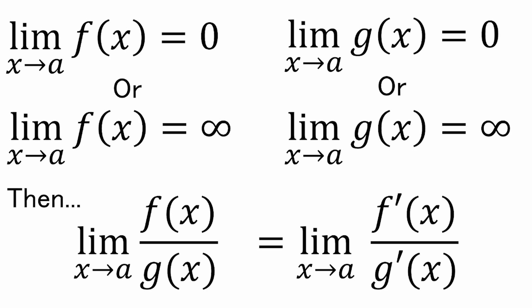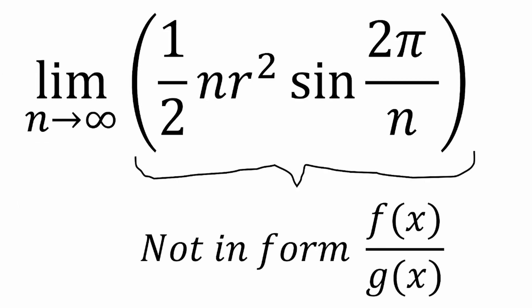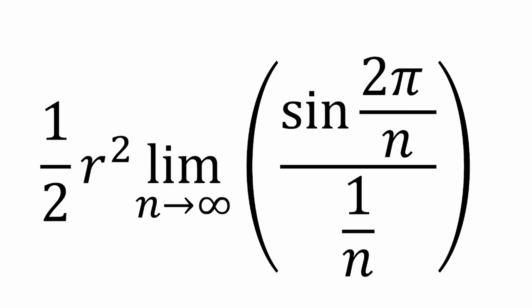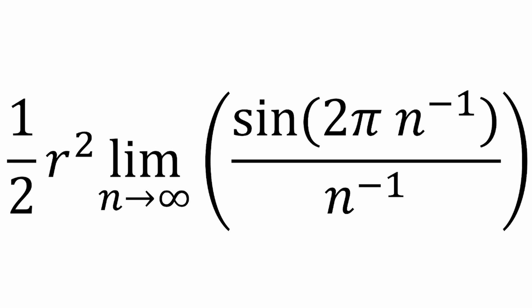Now, the observant amongst the audience will have noticed a little problem with trying to use this trick in our case. We don't have a fraction, we have a product. But this is where we can just use a bit of creativity, and express the product as a complex fraction, otherwise known as every math teacher's least favorite thing to look at and mark. First, let's pull out the constants. Now, rewriting this as a complex fraction, we can say our expression is equivalent to one half r squared multiplied by sine two pi over n, all over one over n. Now, let's write one over n as n to the minus one power, so we can finally use L'Hopital's method to evaluate this limit.